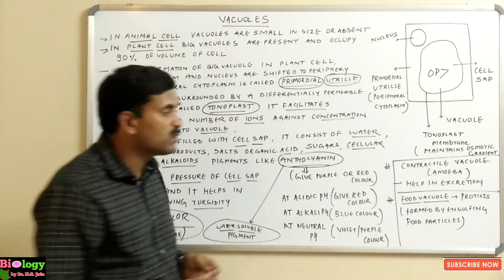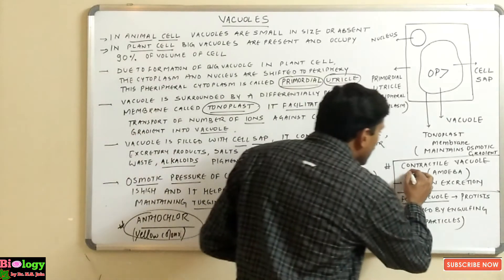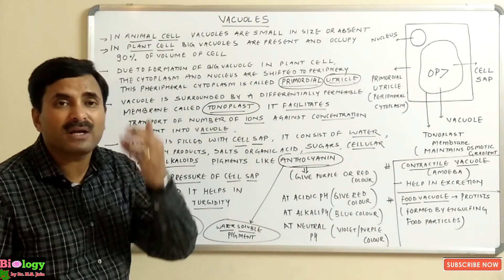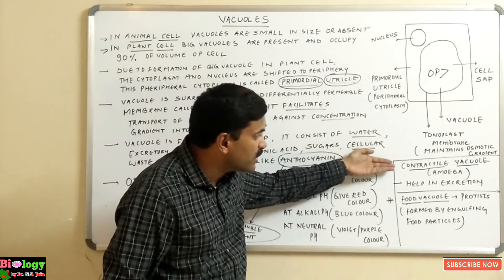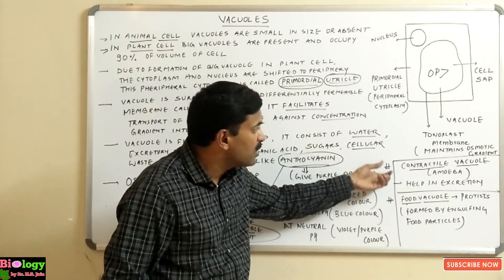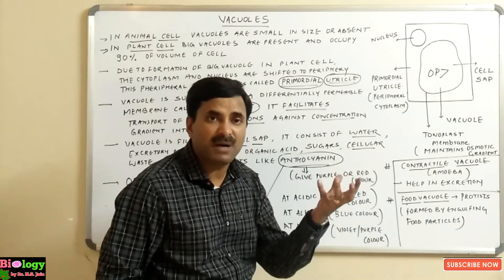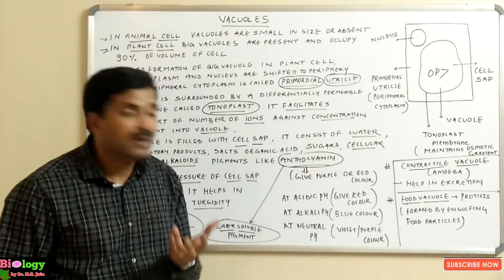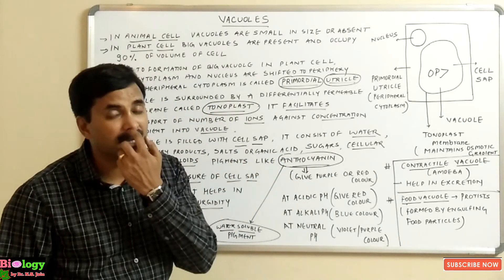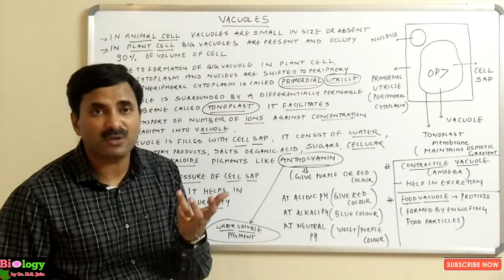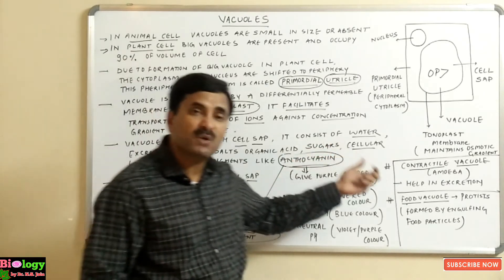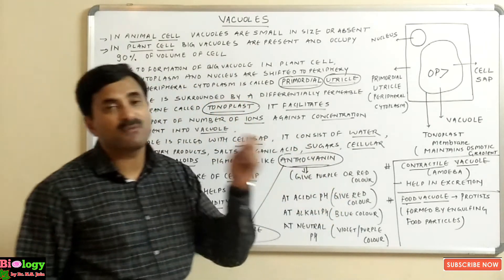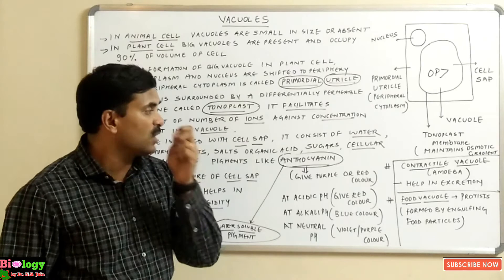There are two more kinds of vacuoles found in different organisms: the contractile vacuole and the food vacuole. The contractile vacuole is found in lower organisms, the most common example being amoeba. This contractile vacuole in amoeba is very important for excretion as well as osmoregulation.